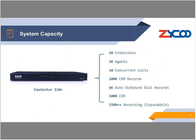Let's take a look at the system capacity of the Call Center S10 Plus. It is dedicated for SMBs requiring up to 20 extensions and 10 call queue agents. It supports up to 10 concurrent calls, 100,000 CRM records, 6,000 auto-outbound dial records, and 100,000 CDR records. The internal storage can support up to 150 hours of call recordings, and it is still expandable — you may attach a USB drive and recordings will automatically be stored there.